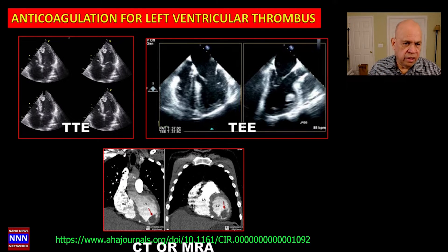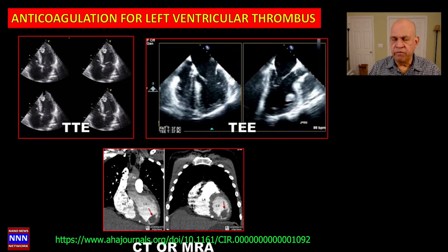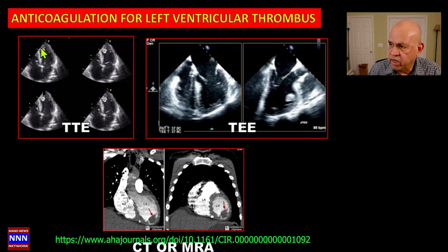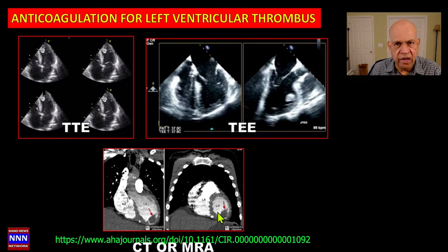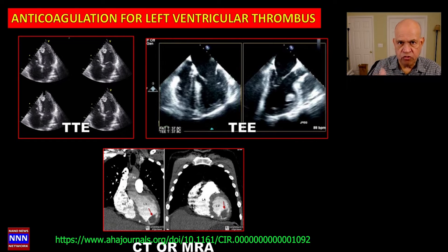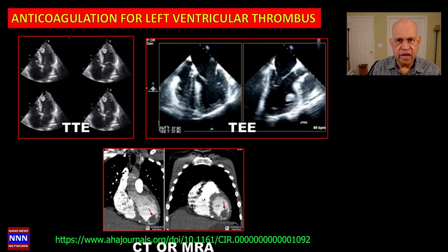Generally you can detect left ventricular thrombus if it is well organized and appears as a mass on 2D echocardiography. However, if the patient's chest conditions are such that we can't get a very good image of the left ventricular cavity, one option is transesophageal echocardiography, which may delineate the presence of a thrombus much better. The ultimate modalities would be CT with contrast, MRA, or CMR, which show the presence of a clot, its characteristics — whether it's old or new — and allow serial studies to monitor changes in thrombus size.